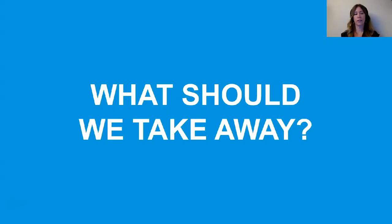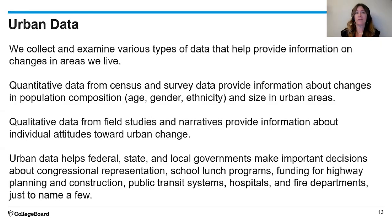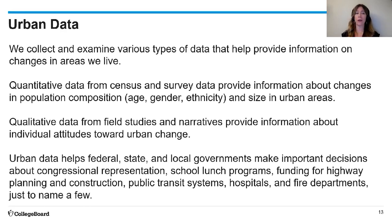What should we take away? We collect quantitative data and look at changes in population composition — like age, gender, and ethnicity — and changes in population size. We ask questions to get qualitative data. All of this data helps federal, state, and local governments make very important decisions about congressional representation, school lunch programs, highway planning and construction, public transit systems, hospitals, and fire departments.